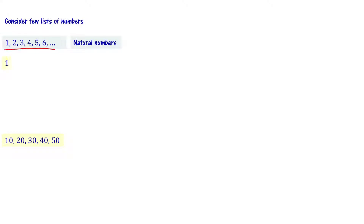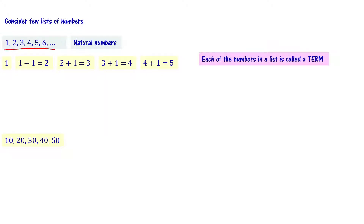The first number is 1. Number 1, then 1 add 1 gives 2, then 1 add 2 gives 3, then 1 add 3 gives 4, then 1 add 4 gives 5, 1 add 5 gives 6. So the numbers are 1, 2, 3, 4, 5, 6. Each number is a term: 2 is a term, 3 is a term. The first term is 1, the second term is 2, the third term is 3, the fourth term is 4, the fifth term is 5, and so on.